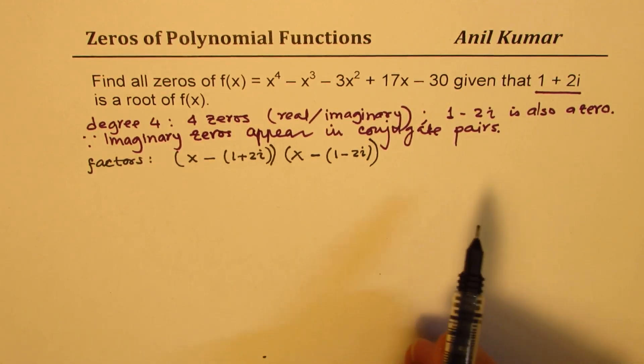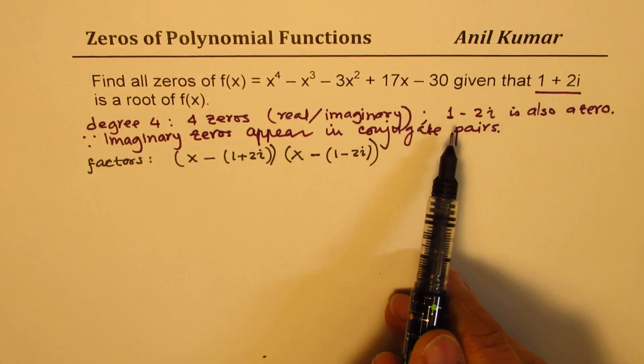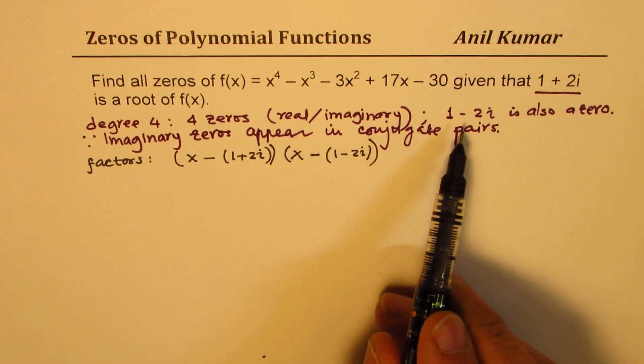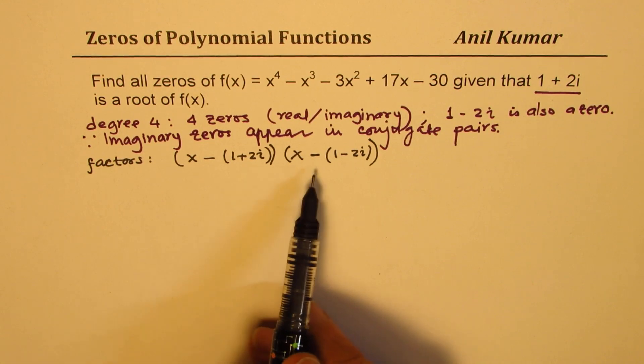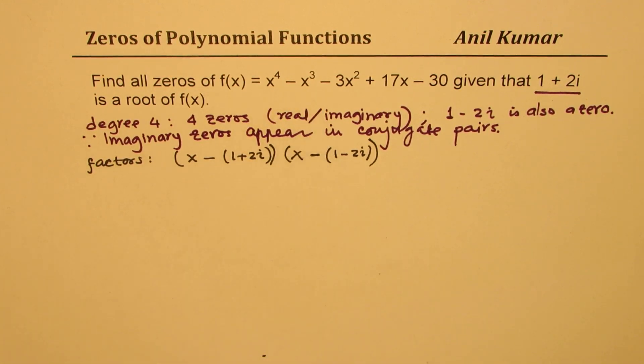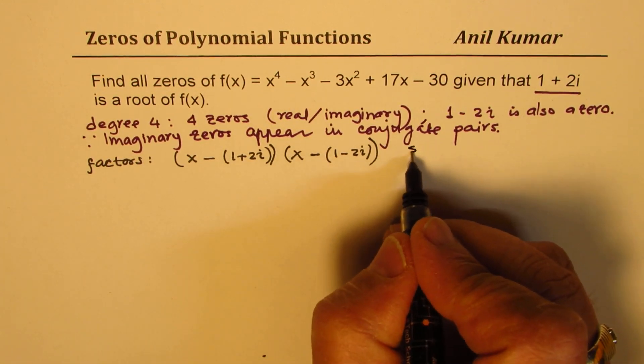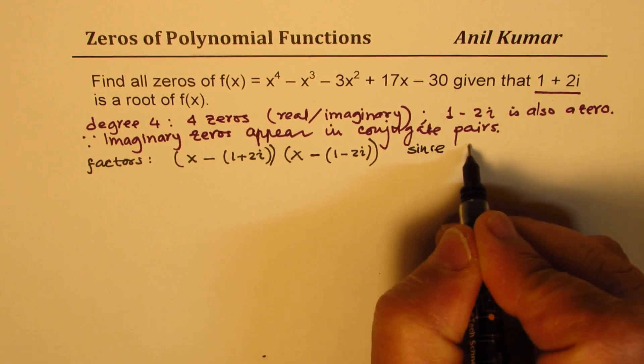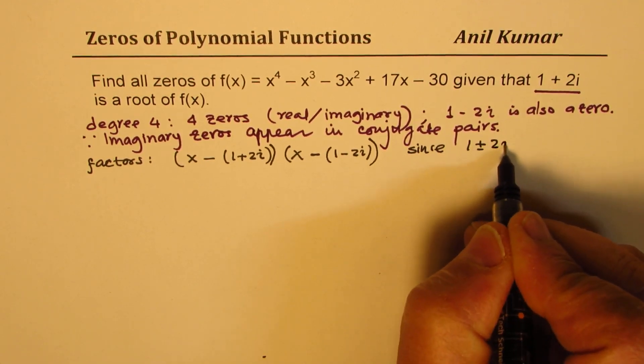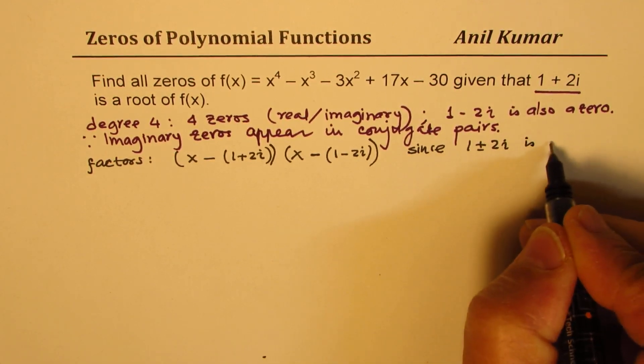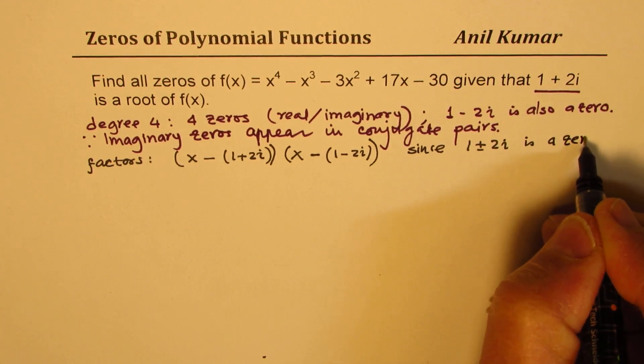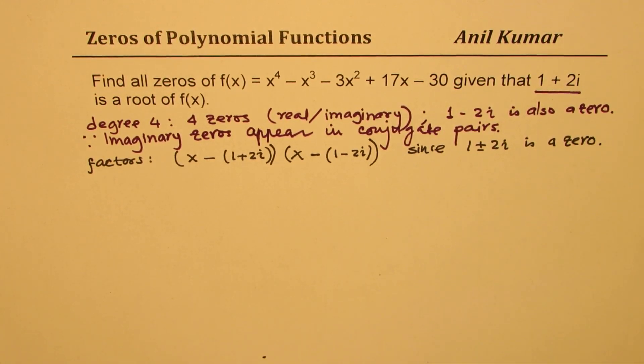Definitely, since 1 + 2i and 1 - 2i are zeros, these are the two factors, correct? For sure, of the given equation. Since 1 ± 2i are zeros.